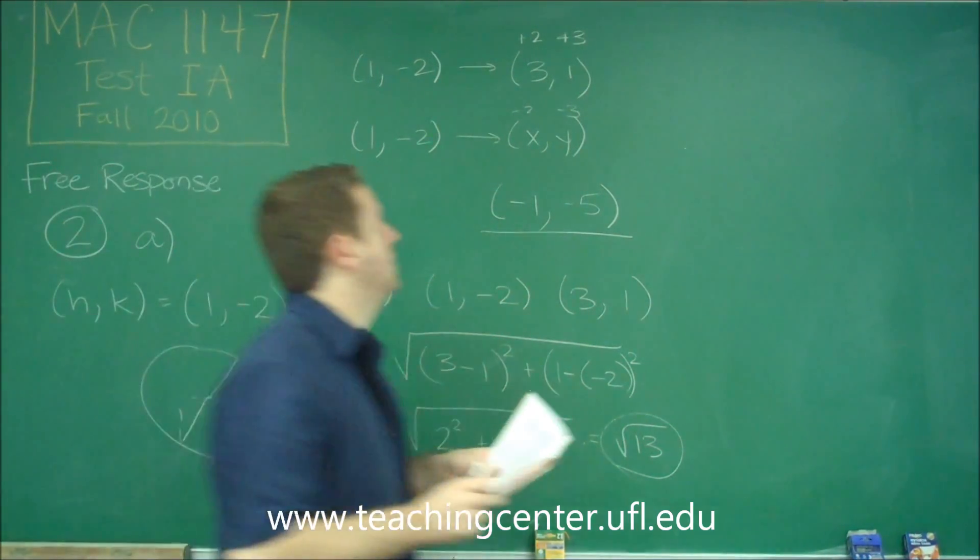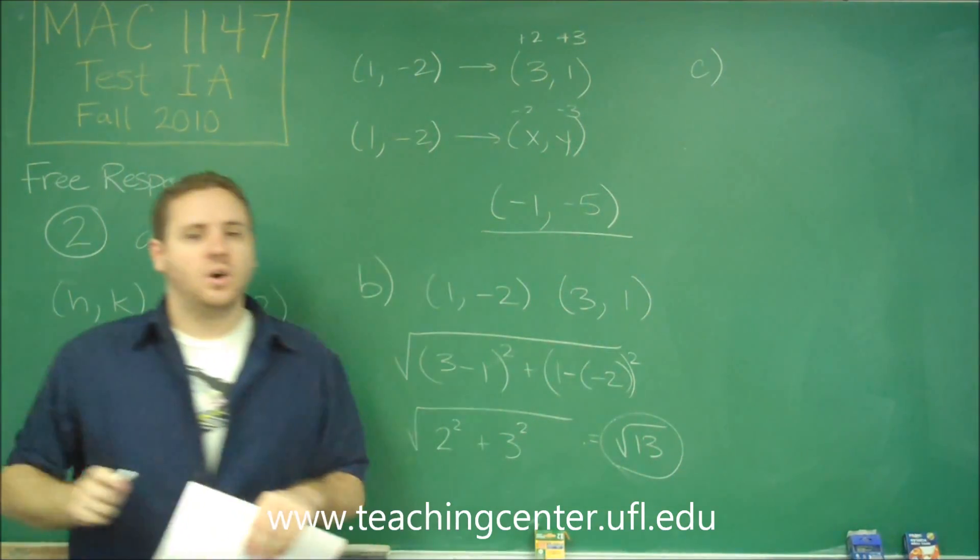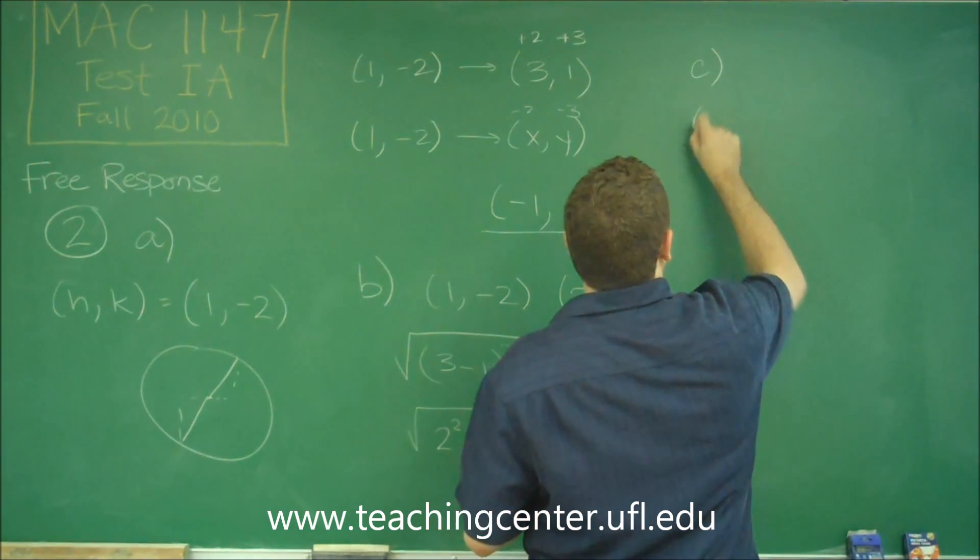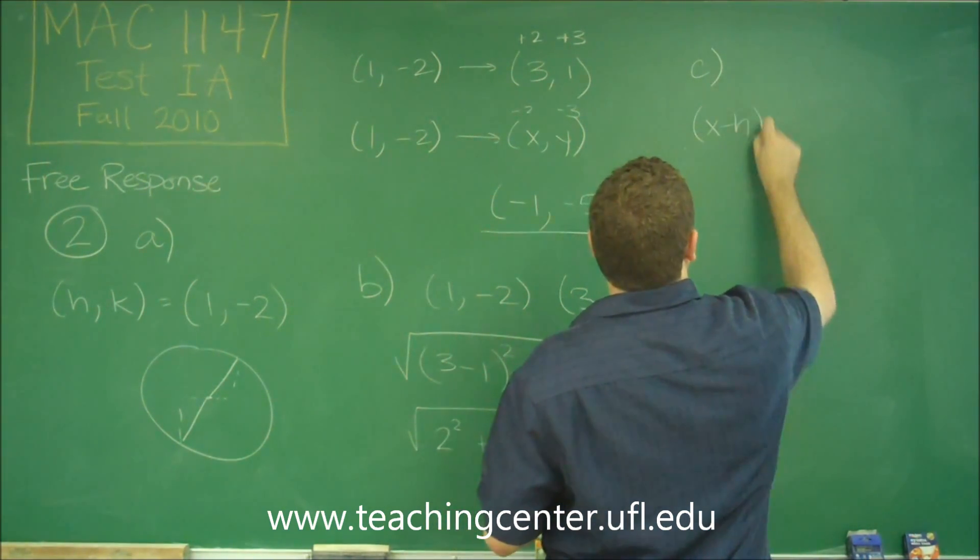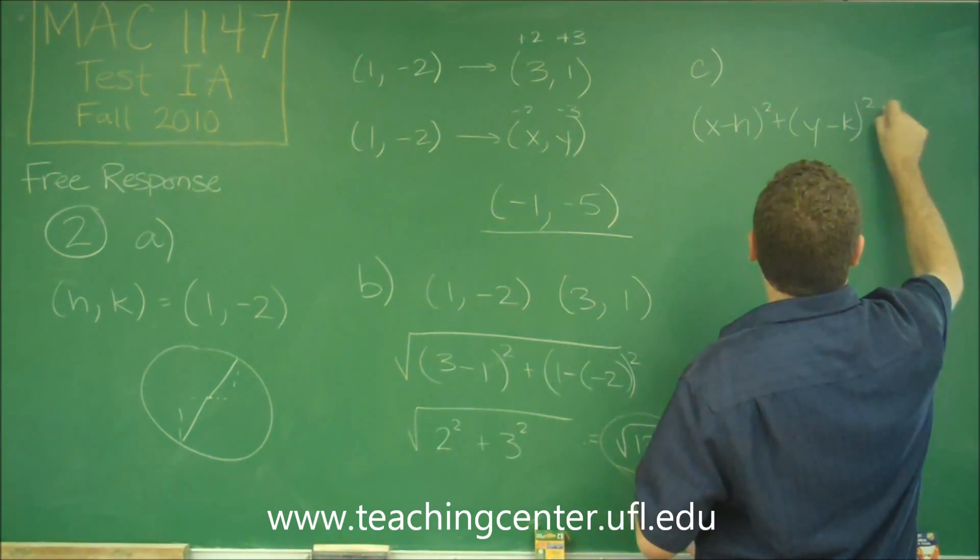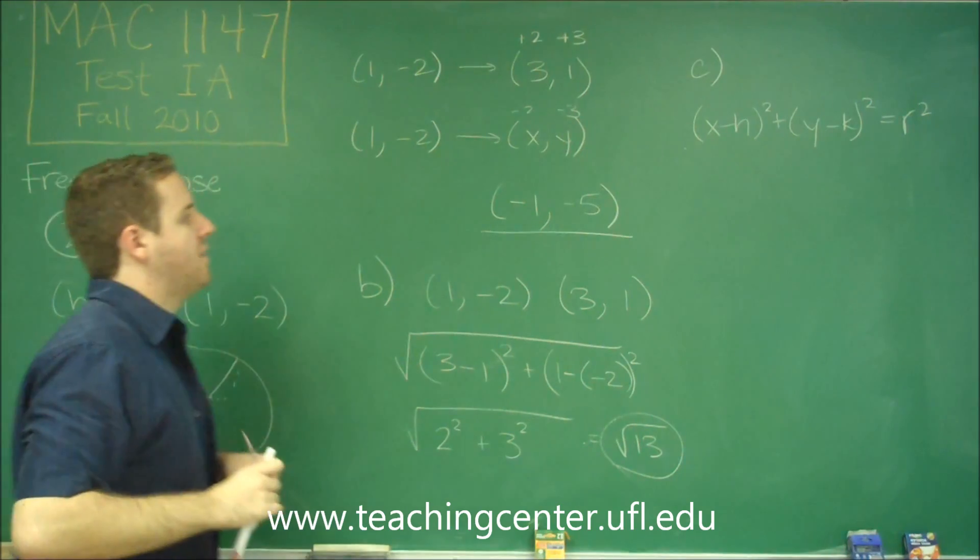And finally, find the general form of the circle. So I'll write out the general form and then plug in what numbers we have. So the general form of the circle is always (x-h)² + (y-k)² = r². Well, we have all this information.